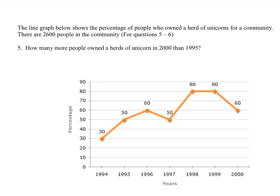How many more people owned herds of unicorns in 2000 than 1995? So these are percentages, and it looks like it wants the number of people, right? And our population here is 2,600. So in 1995, we've got 50%, and in 2000, we have 60%.